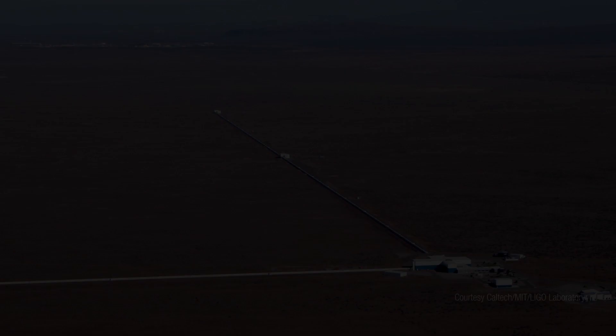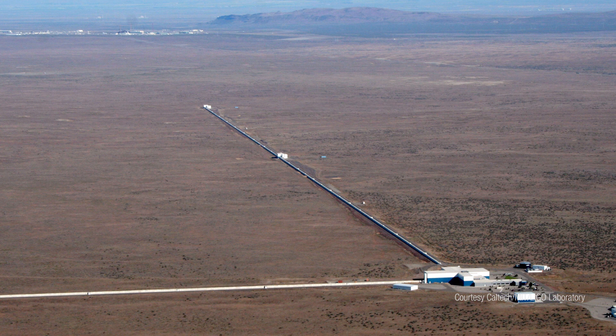One of our contributions here at Monash was to develop a system of vetting detections. This involved injecting a fake gravitational wave signal into the detector. By showing that we can recover the fake signal, it gives us confidence that when we saw the real thing, we knew what we were doing.